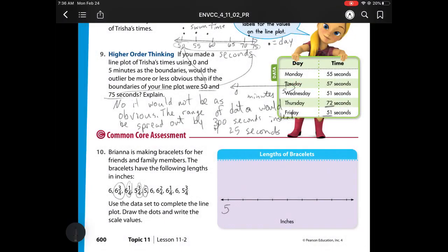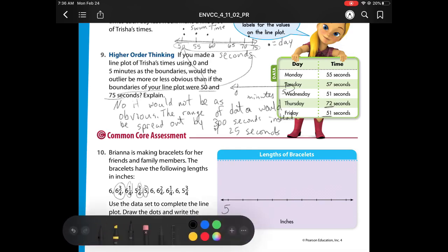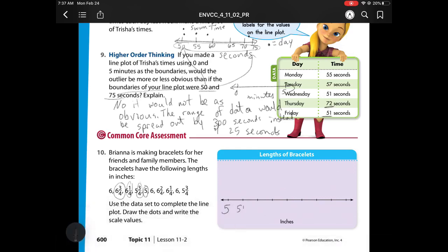Since we're counting by fourths, let's see what we have. We would have 5 and a fourth. 5 and 2 fourths. 3 fourths, 6. 6 and a fourth. 6 and 2 fourths. 6 and 3 fourths. And 7 wholes. So now let's plot our dots. We have a 6. We have a 6 and 3 fourths. We have a 6 and 1 fourth. We have a 5 and 3 fourths. We have a 5. We have another 6, so another dot on top of it. We have a 6 and 2 fourths. We have another 6 and 1 fourth. We have another 6. And we have a 5 and 3 fourths.